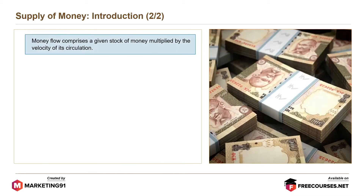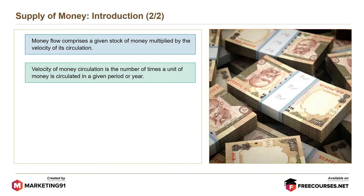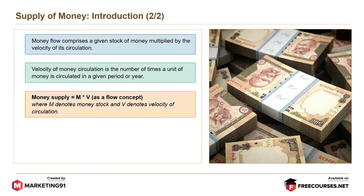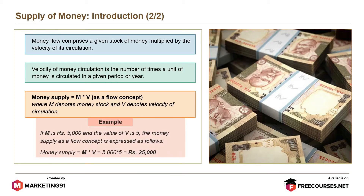Money flow comprises a given stock of money multiplied by the velocity of its circulation. Velocity of money circulation is the number of times a unit of money is circulated in a given period or year. Money supply equals M into V as a flow concept, where M denotes money stock and V denotes velocity of circulation. For example, if M is rupees 5,000 and the value of V is 5, the money supply as a flow concept equals 5,000 into 5, which is rupees 25,000.